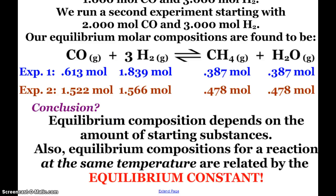So what can I conclude from this? Well, our equilibrium composition does indeed depend on the amount of starting substances. Those graphs we just looked at were very specific to 3 moles of carbon monoxide and 1 mole of hydrogen. But it makes sense that our equilibrium occurs kind of at the same spot. And this is true, so we will find that the compositions at the same temperature are related by this equilibrium constant that we're going to see.